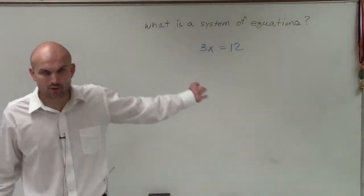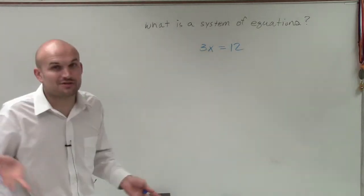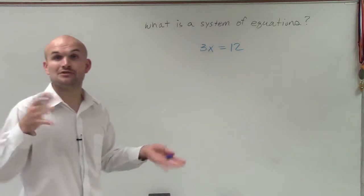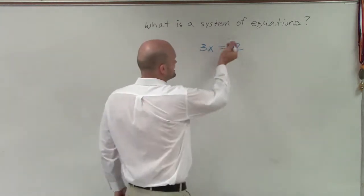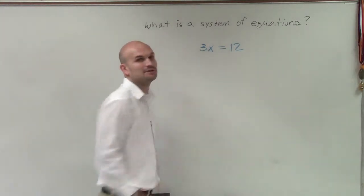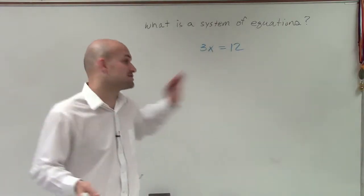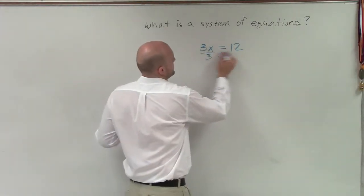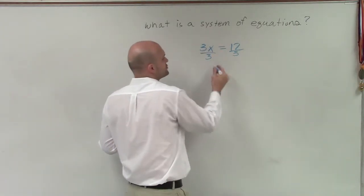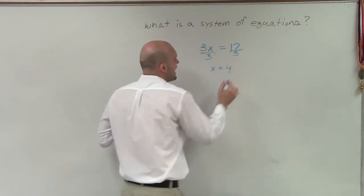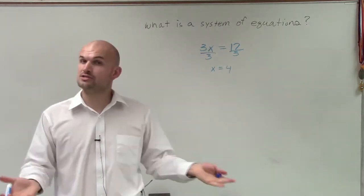So pretty much what we have here is an equation, right? So in solving this equation, we would solve for our variable by using our inverse operations. So we'd say 3x equals 12, we'd divide by 3, and we'd say, to make this equation true, actually let me solve it here. This equation is true when x equals 4, and that is what we called our solution.